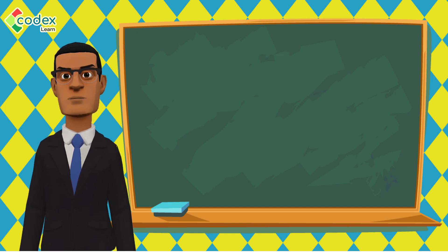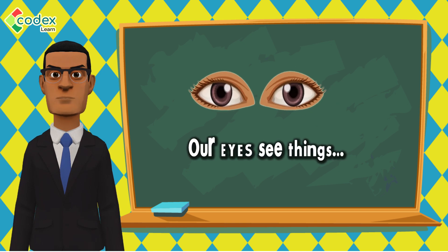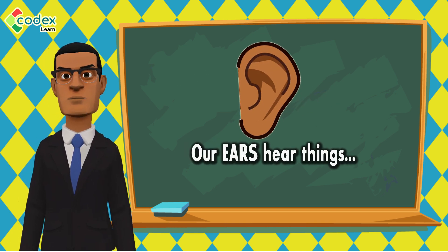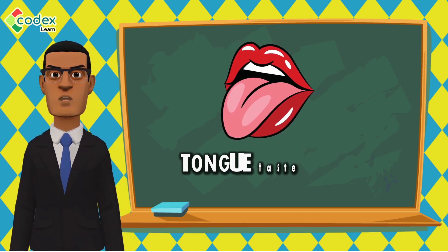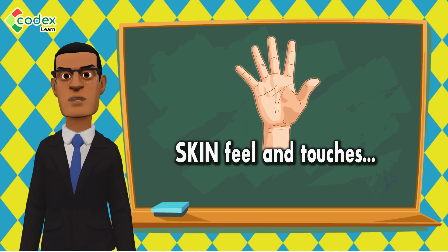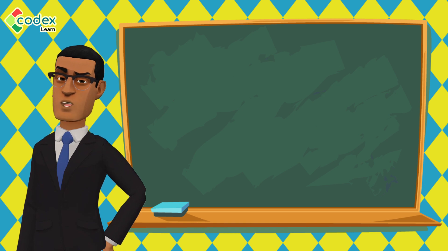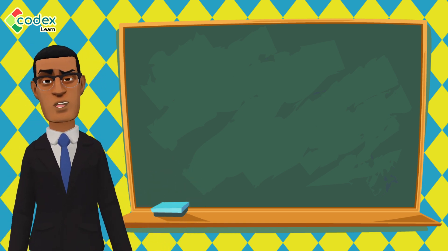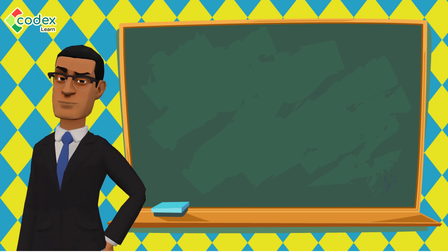There are many things in the environment. We explore the environment using our five senses. Our eyes see things, our ears hear things, our nose smells things, our tongue tastes things, and our skin can feel and touch things in the environment. For example, we may not be able to see the air in the school environment, but we can feel it on our skin and hear it when it moves.